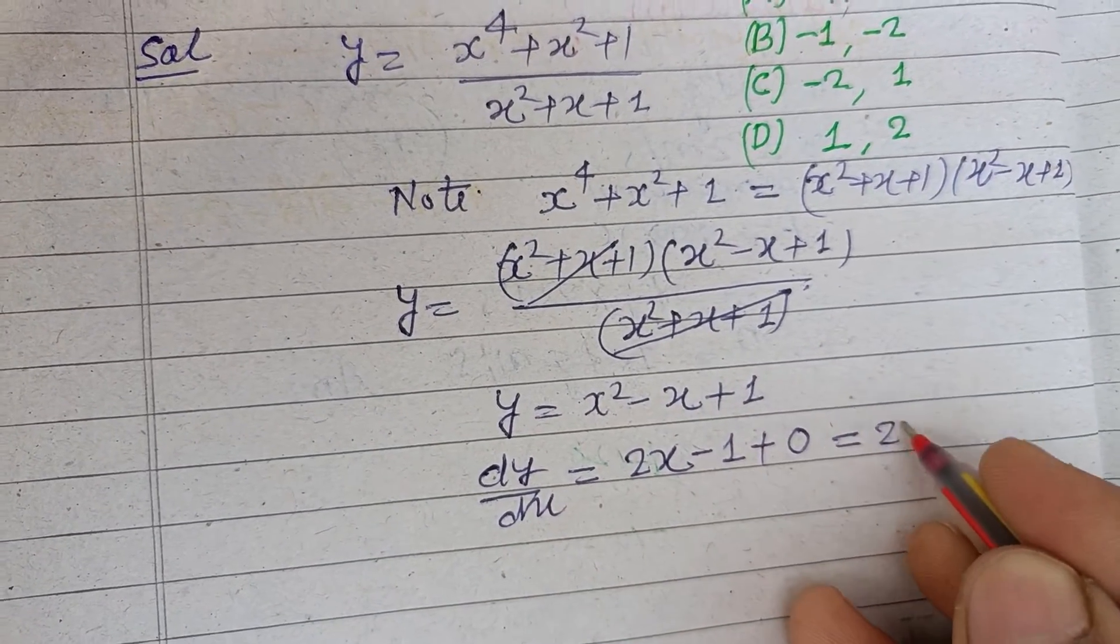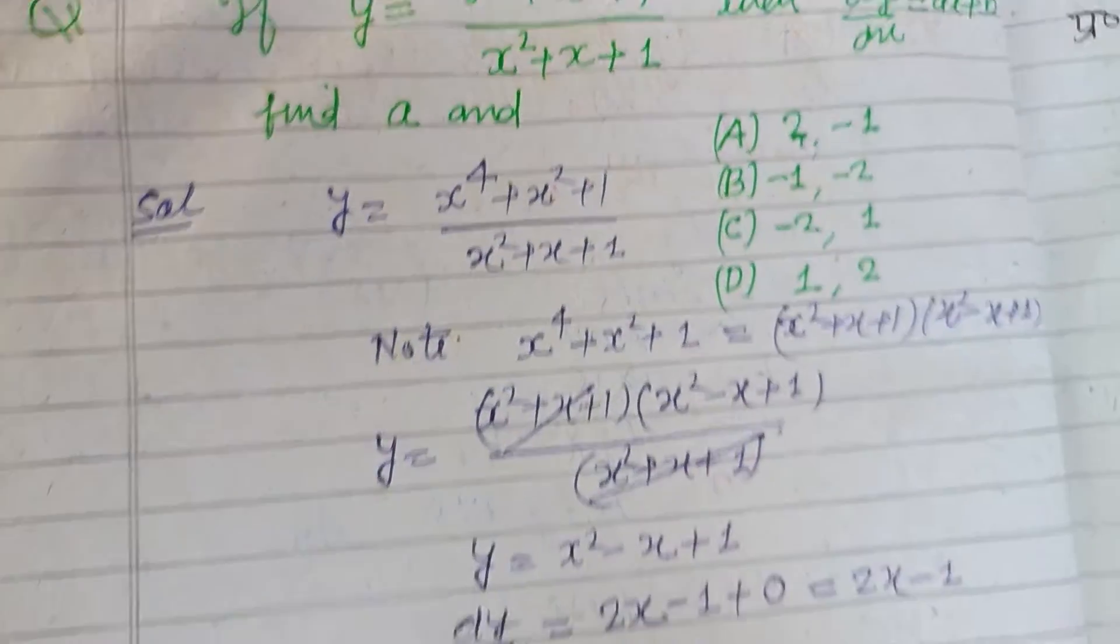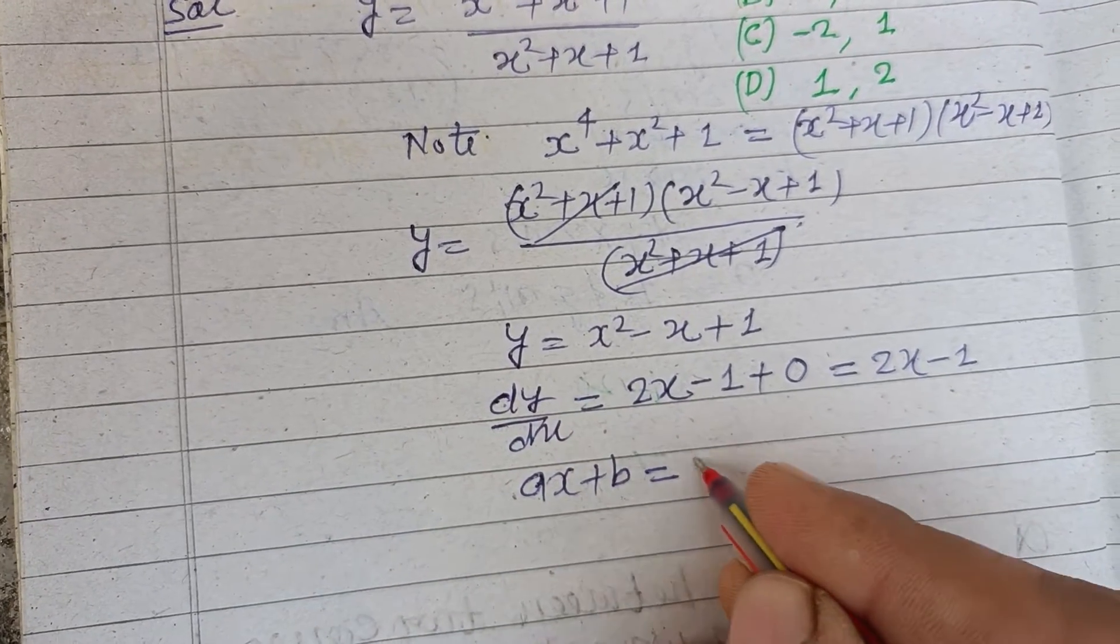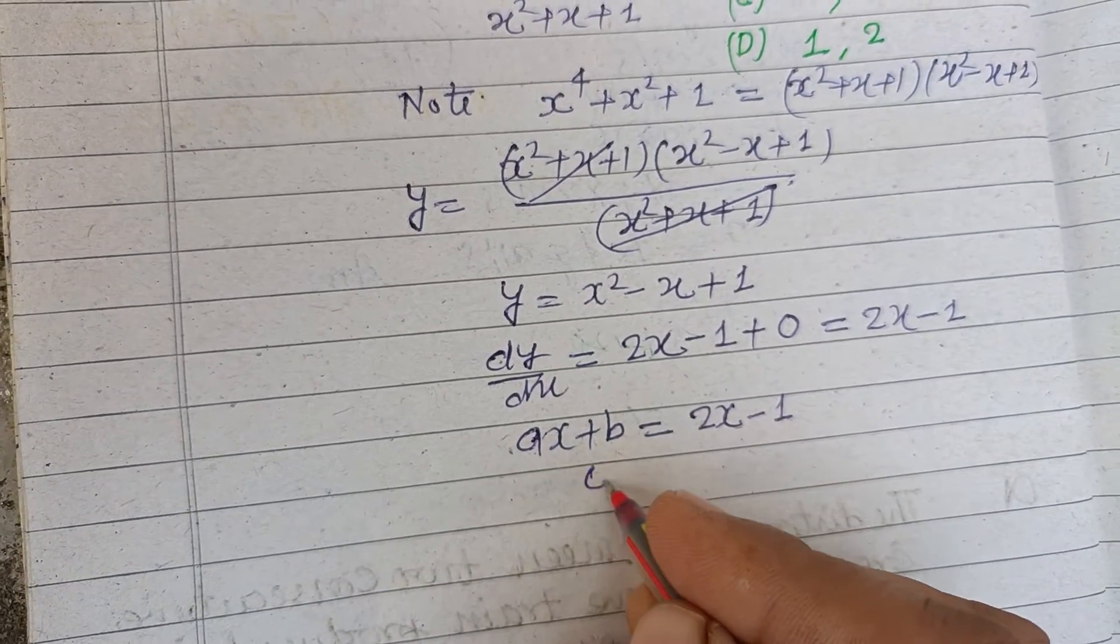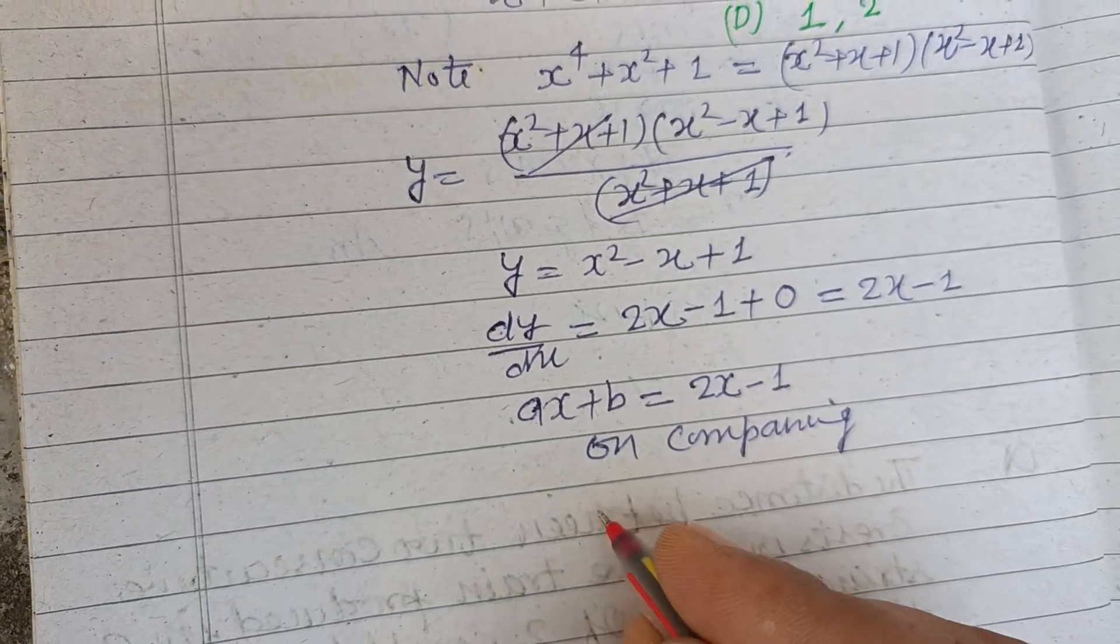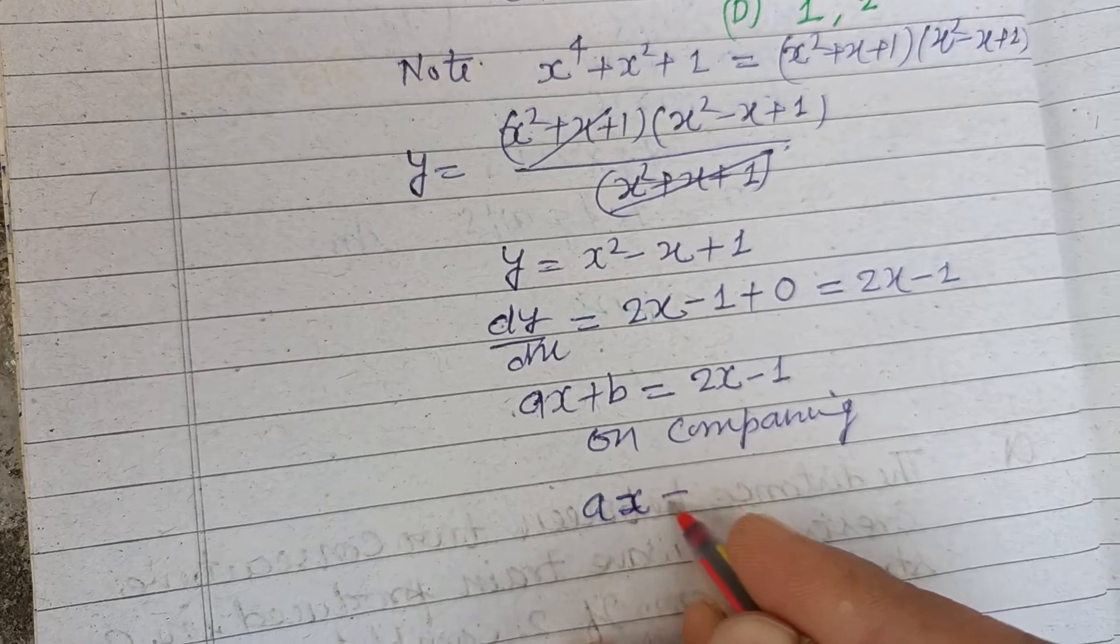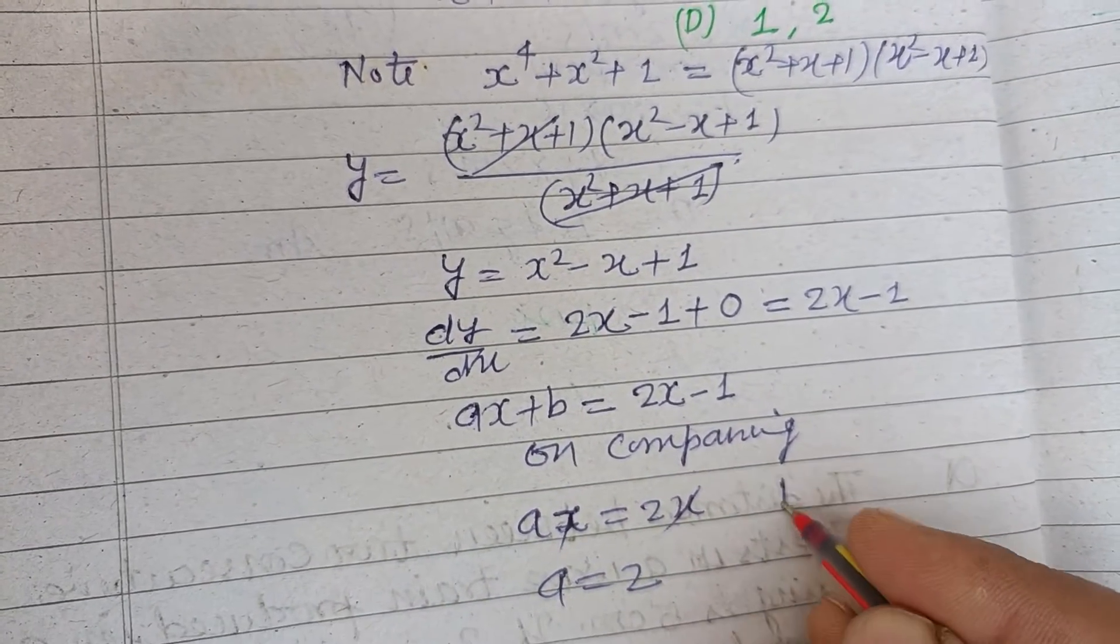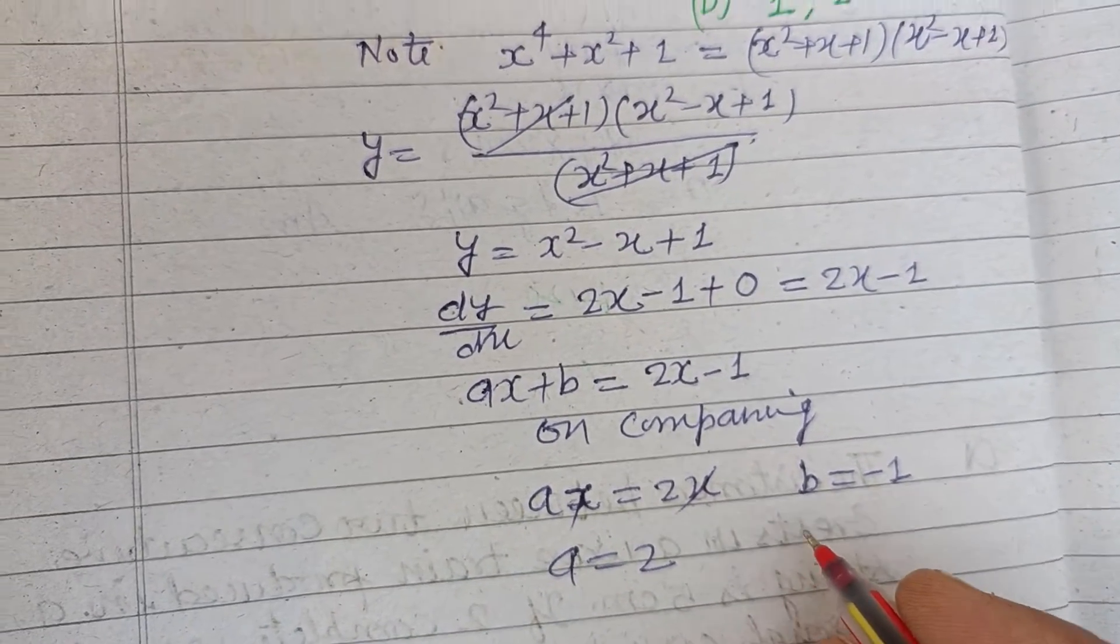And it is given that ax plus b. dy by dx is given and we got 2x minus 1. On comparing, we got ax is 2x, x cancel, a equals 2, and b equals minus 1.